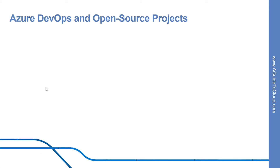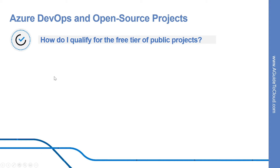Now, let us look into some questions you might ask. How do you qualify for the free tier of Azure Pipeline for public projects? Microsoft will automatically apply the free tier limits for a public project if you meet both of these conditions: your pipeline is part of an Azure Pipelines public project, or your pipeline builds a public repository from GitHub or from the same public projects in your Azure DevOps organization.